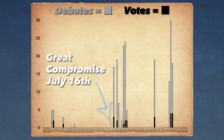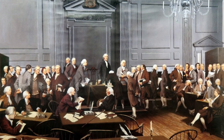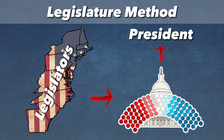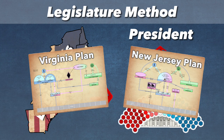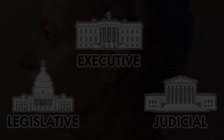After the convention agreed to the Great Compromise and created a bicameral legislature, the delegates turned their attention to how to choose the president. While the different methods were debated, the delegates repeatedly opted for the legislature method, as it was tied to the Virginia and New Jersey plans. However, this violated the separation of powers.